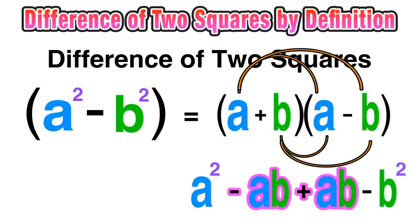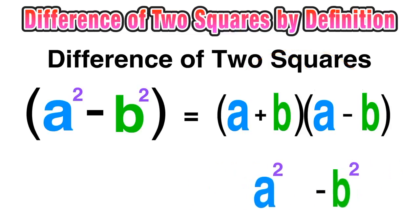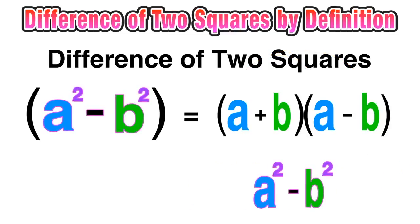b times a is just ab, and b times negative b is minus b squared. Notice here that our middle terms negative ab plus ab cancel each other out, and what we are left with is a squared minus b squared, which is again what we started with.